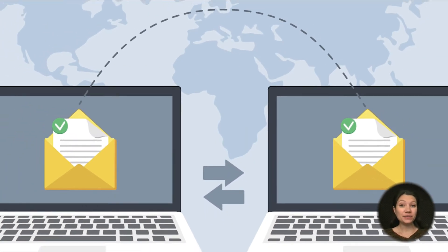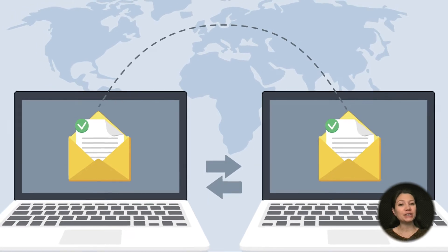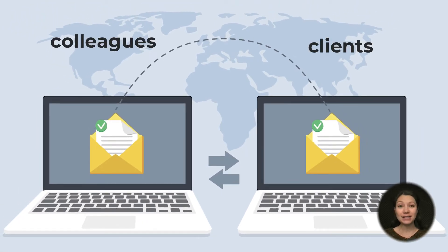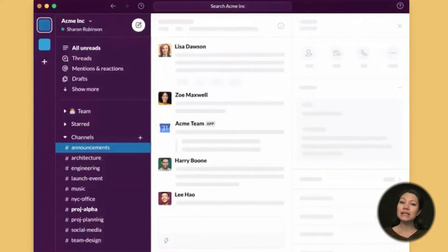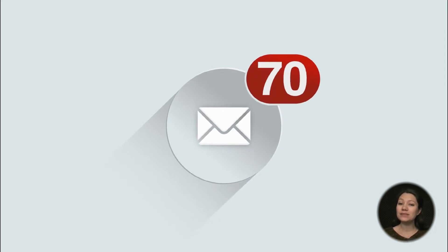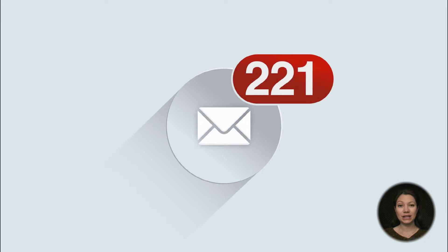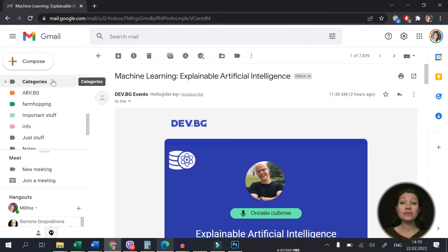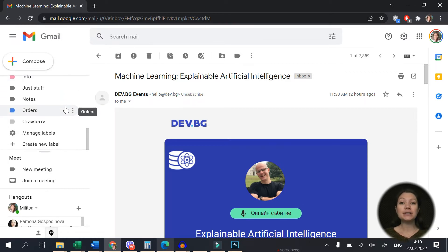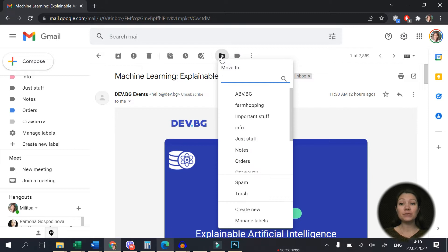There is one big advantage of emails when it comes to communication. You can exchange messages with both colleagues and clients, whereas Slack is mostly used for internal communication between teammates. One downside is the fact that you probably get lots of emails on a daily basis. So if you want to put more order in your messages and are using, for example, Gmail, you can create different folders for different projects, so you don't have to scroll around to find the message you are looking for.